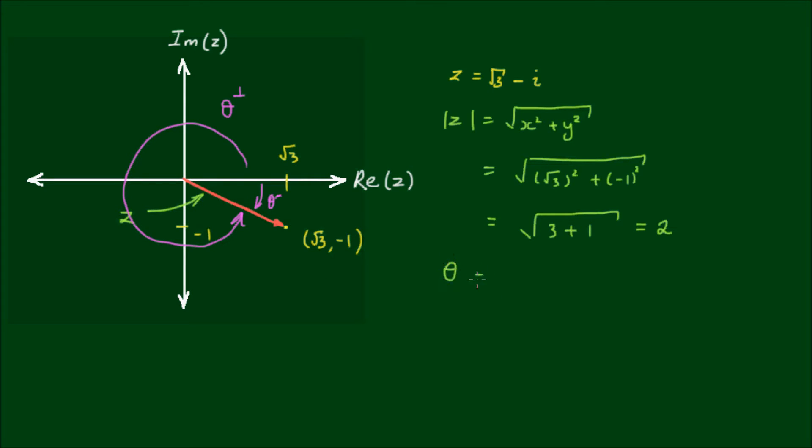So we can write the angle θ, or the argument of z, is equal to the inverse tan of negative 1 divided by root 3. And this equates to the value of negative π on 6 in radians.